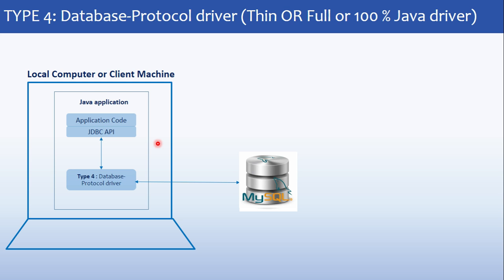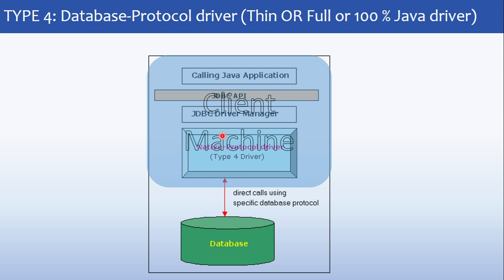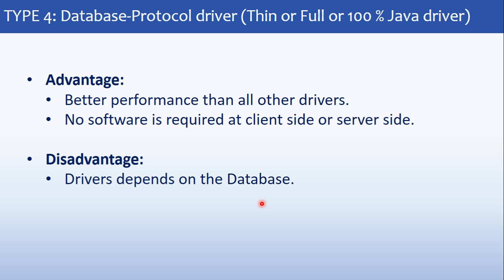From the block diagram point of view, the Java application, JDBC API, and the native protocol driver all reside on your client machine. The native protocol driver needs to be installed as per your underlying database. This communication is a direct call using the specific database protocol.